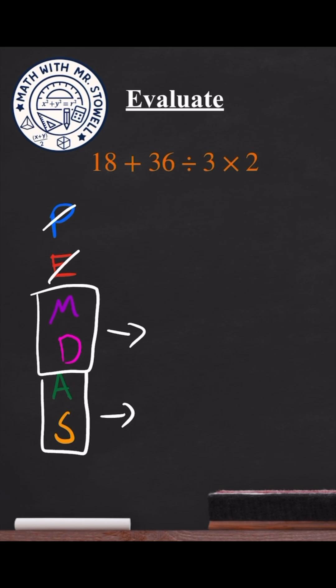We actually do, and we have division, which goes first. So then we are going to end up dividing the 36 by 3 before we do anything else, and that is going to give us 12.